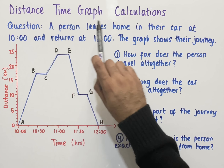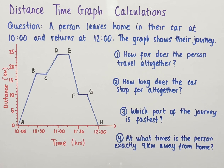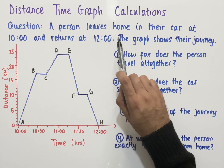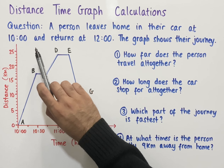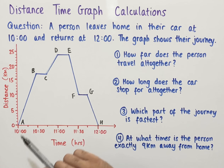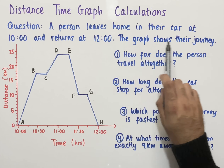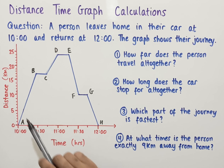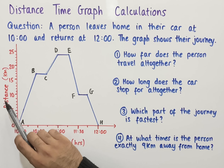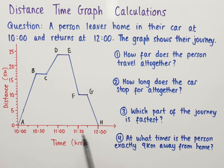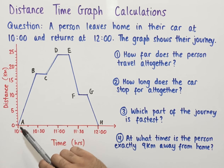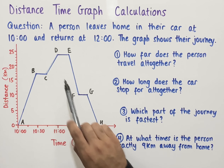Let's look at distance-time graph calculations. The question says a person leaves home in their car at 10 o'clock and returns at 12 o'clock. The graph shows their journey. We've got a distance-time graph where on the y-axis we have distance in kilometers, and on the x-axis we have time in hours. The graph has different parts labeled with letters.